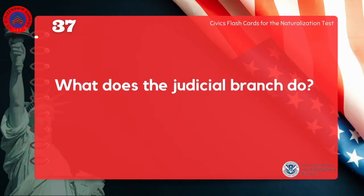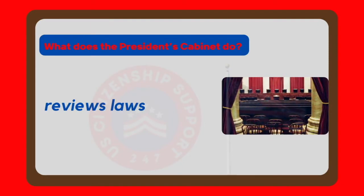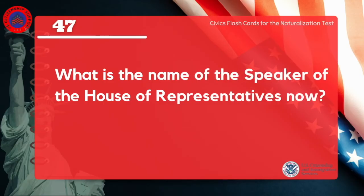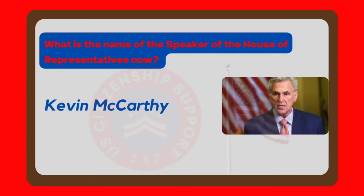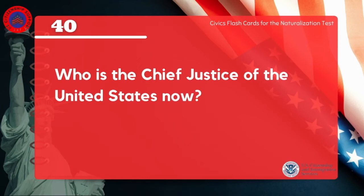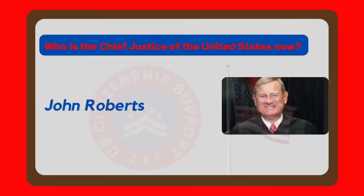What does the Judicial Branch do? Reviews laws. What is the name of the Speaker of the House of Representatives now? Kevin McCarthy. Who is the Chief Justice of the United States now? John Roberts.